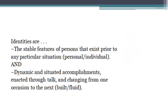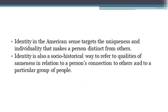Ab identities ko dekhne ke do ways hain. Ek to yeh ke identity is stable — hamare jo stable features hain ek person ke, jaisa ke uski ethnicity aati hai, uski nationality aati hai, to chizein fixed hain. Or ek taraf kehte hain ke identities jo hain woh dynamic hain, yeh change hoti hain. American sense mein identity is something — aisi koi cheez hai, aisi koi characteristic hai jo aap ko baqi individuals se distinct banati hai, unique banati hai.